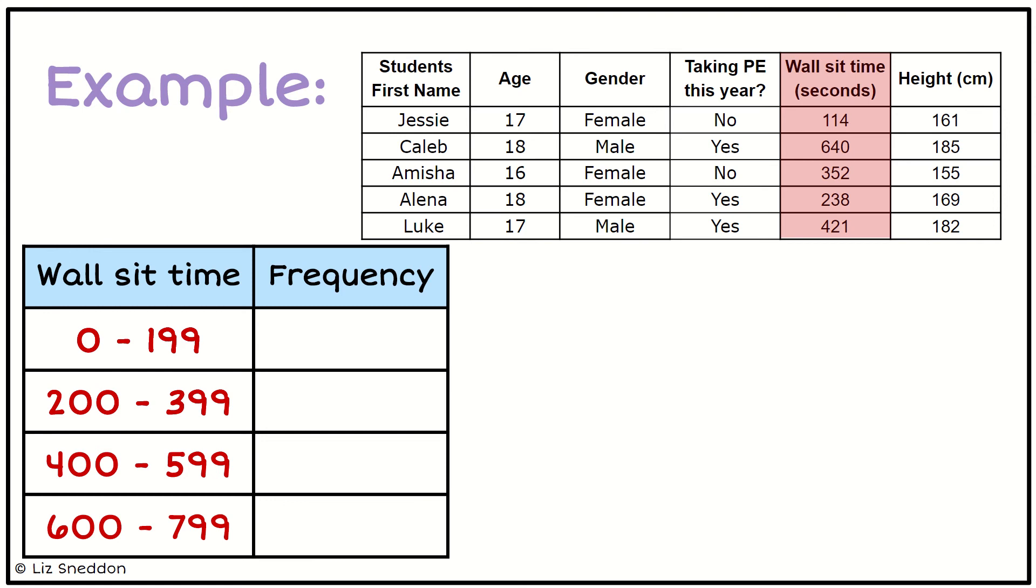Now that I have my categories, I'm going to see how many pieces of data fit in each. I've got my 114 there. That is the only number in that first category between 0 and 199.